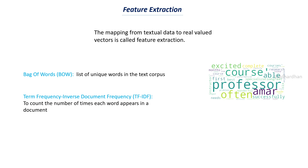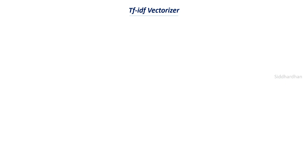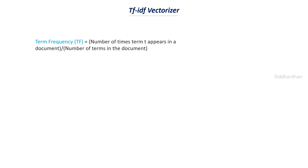Now let's understand more about term frequency and inverse document frequency. We will be using a TF-IDF vectorizer. TF stands for term frequency, and you can see the formula here. The formula for term frequency is: the number of times term T appears in a document divided by the total number of terms present in the document. So if there is a word called 'offer' in the dataset, this vectorizer will count how many times that word has been repeated and divide it by the total number of words in the document. This is called term frequency, and it can tell us what the important words are.